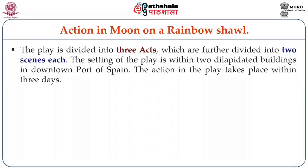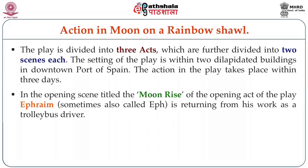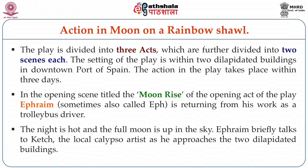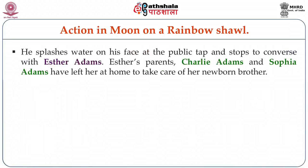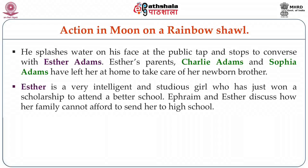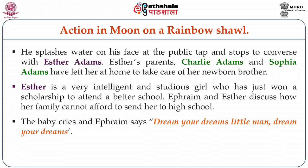Action in Moon on a Rainbow Shawl. The play is divided into three acts, each further divided into two scenes. The setting is within two dilapidated buildings in downtown Port of Spain and the action takes place within three days. In the opening act titled The Moon Rise, Ephraim — sometimes called F — is returning from work as a trolleybus driver. The night is hot and the full moon is up in the sky. He briefly talks to a local calypso artist as he approaches the buildings. He splashes water on his face at the public tap and stops to converse with Esther Adams. He then looks at the baby and says, 'Dream your dreams little man, dream your dreams.'